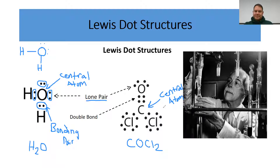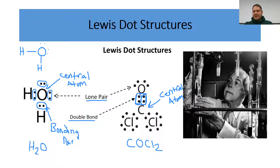Everything else is bonded around that central atom. Between carbon and oxygen, we have four dots — those four dots represent what we call a double bond. There are two covalent bonds between the oxygen and carbon, so we call it a double bond. In a double bond, four electrons are being shared between the two atoms. The chlorines each have a single bond, with lone pairs around them, and there are no lone pairs around the carbon in this molecule.